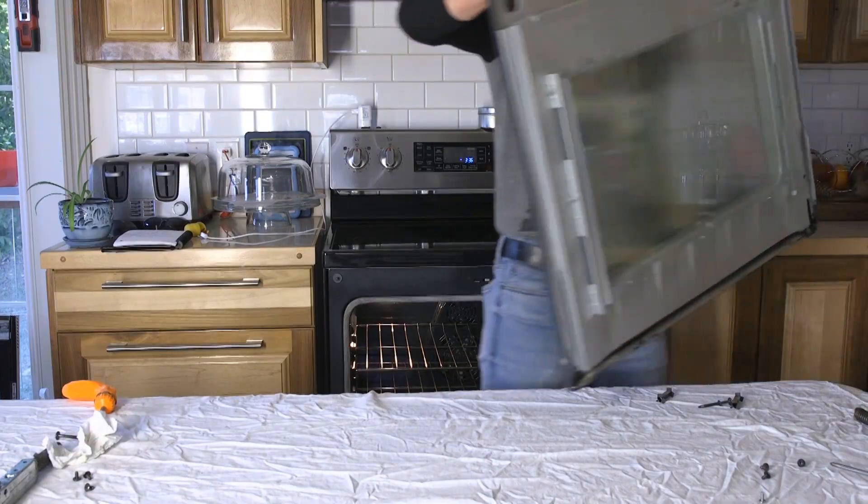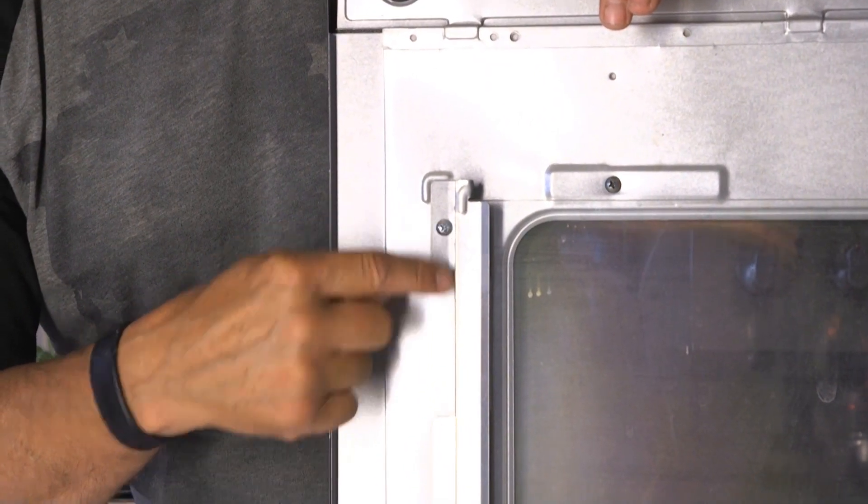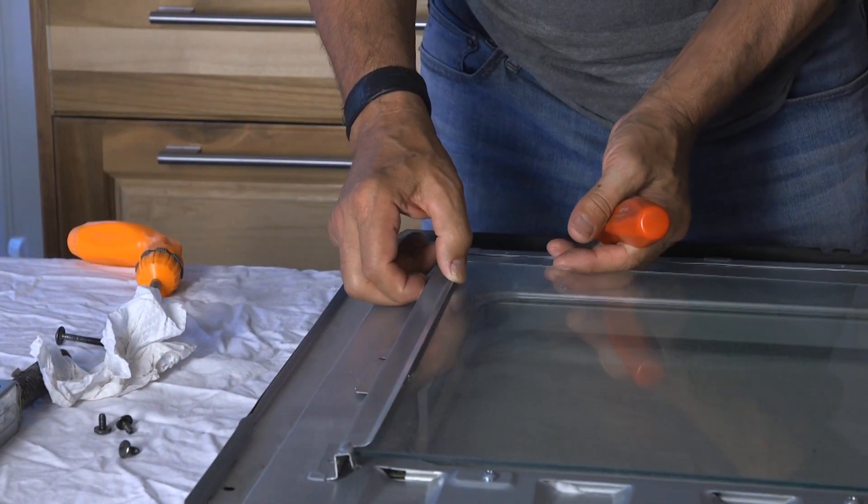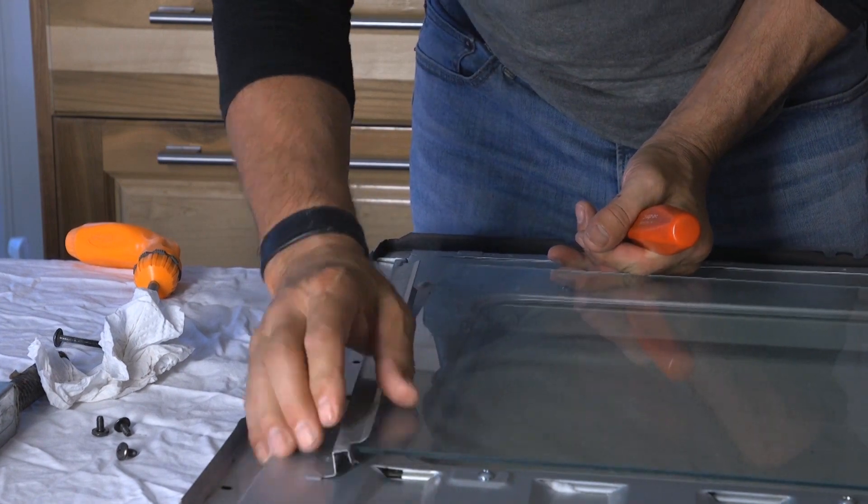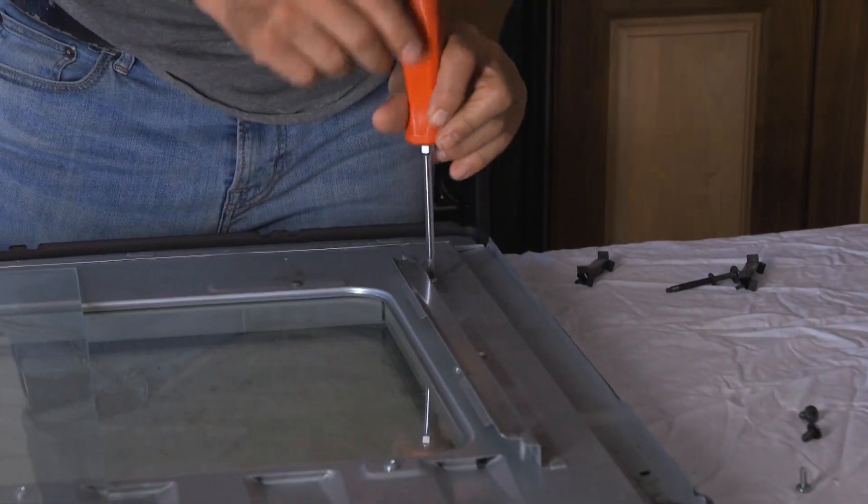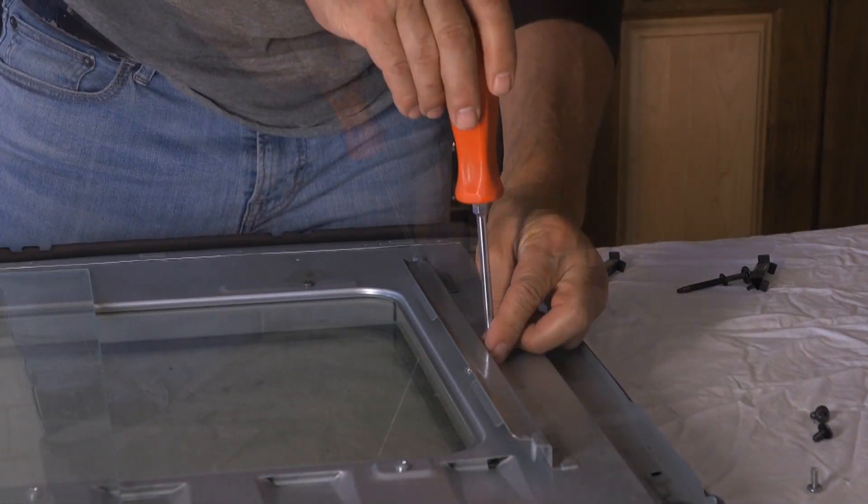The second window is held by two sets of brackets and screws, one on each side. Once the window is freed from this bracket, you can clean it the same way that you did the front panel window.